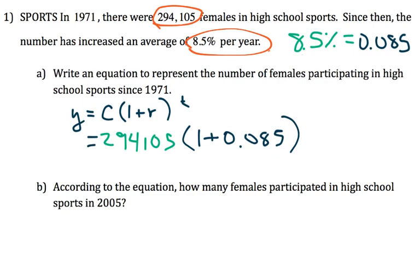Now they're saying since 1971, we're just going to use t here. But when we have to apply it, we can't forget that this was based on our starting year. This is our initial year. But as far as question A is concerned, we have already done everything they want us to do.